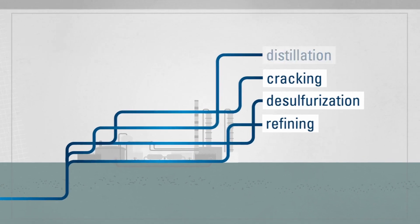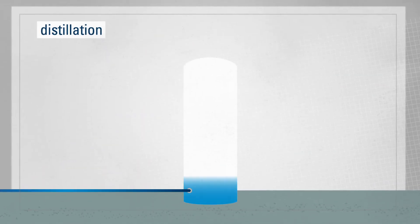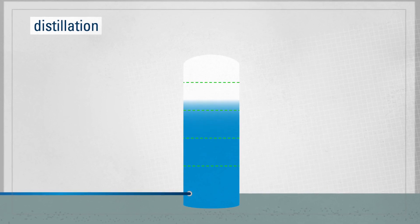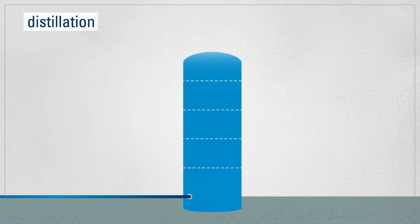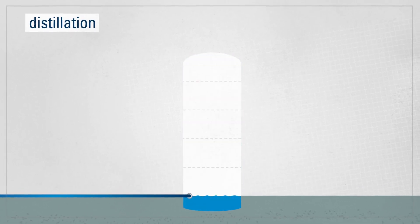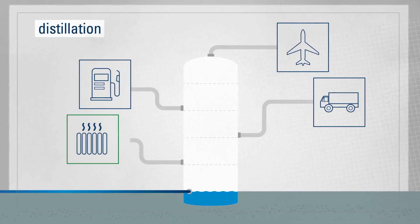By undergoing a distillation process, the crude is broken down into its components. The hydrocarbon molecules can then be put back together in a different way. For example, for liquid gas, gasoline, diesel, or heating oil.